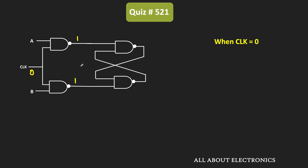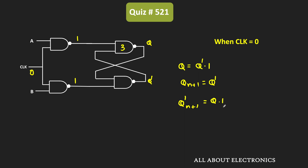Whenever the clock signal is zero, the output of both NAND gates will be equal to one, because for a NAND gate when any one input is zero the output is one. Let's call this output Q and the second output Q-bar. The output of the third NAND gate is Q-bar times one, so Q(n+1) equals Q-bar, and Q(n+1)-bar equals Q. Therefore, when the clock is zero, both outputs Q and Q-bar remain in their specific state — the race around condition won't occur.